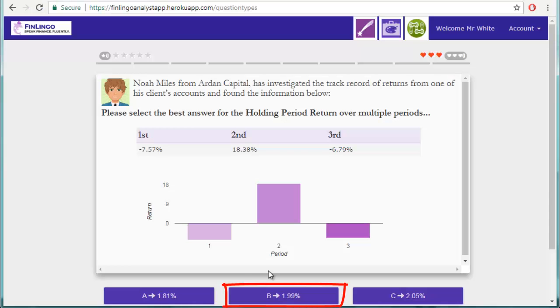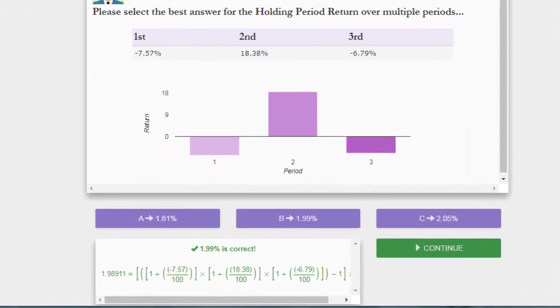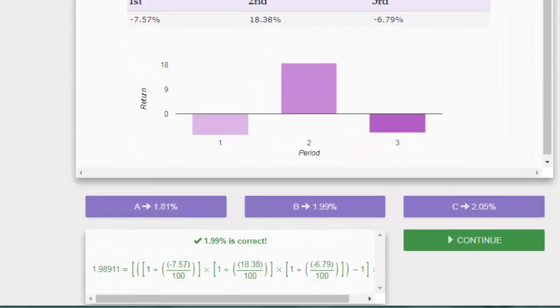So now we have the answer, let's check it out on finlingo. Click it and check you worked it out the right way. So that's it for working out the holding period return over multiple years using annual return figures.